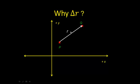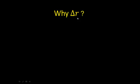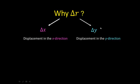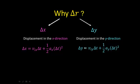To go from one point to another you can travel in the x direction and then in the y direction. We can break delta r into displacement in the x direction and displacement in the y direction. The x-displacement equation is: Δx = v₀ₓ·t + ½aₓ·t². Similarly for y: Δy = v₀ᵧ·t + ½aᵧ·t². When the direction is clear, we simplify to: Δx = v₀·t + ½a·t².